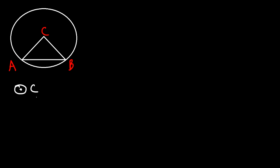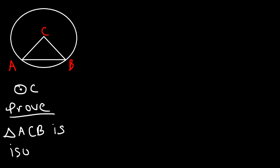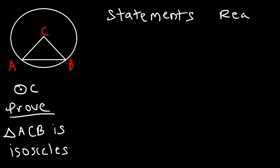In this video we're going to focus on proving if a triangle is isosceles, using two-column proofs. Consider the picture on the board — let's call the points A, B, and C. We're given that C is the center of the circle, and our goal is to prove that triangle ACB is isosceles. In a two-column proof, the left side has statements and the right side has reasons.